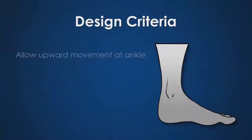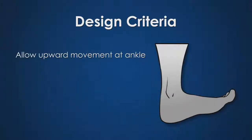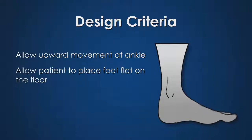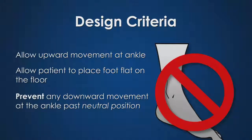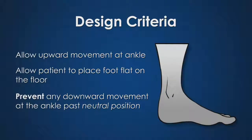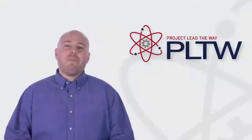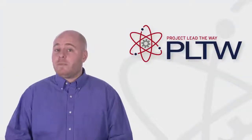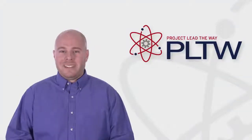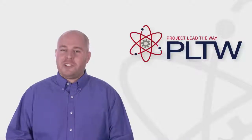The orthosis needs to allow upward movement at the ankle and allow the patient to place their foot flat on the floor when standing. The orthosis needs to prevent any downward movement at the ankle from the neutral position where the foot is parallel with the floor — this means the orthosis will stop the patient from pointing or raising up on their toes. Remember, your patient has to wear this, so the orthosis needs to be comfortable and also removable. Good luck and have fun as you work through this challenge.